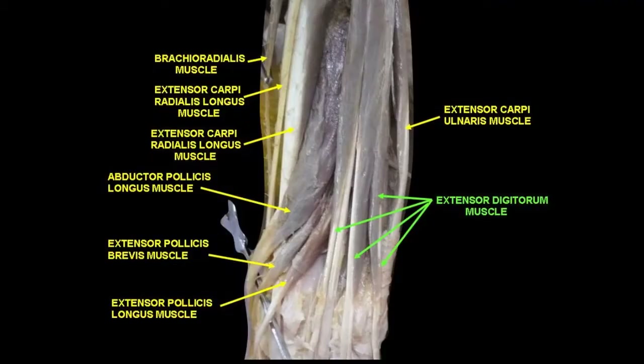The extensors on the forearm are innervated by the radial nerve. Essentially, the deeper muscles originate from the radius, ulna, and the interosseous membrane, whereas the more superficial ones come from the common extensor origin. One thing to note is that the first and third compartment muscles cross over the second compartment muscles, and this can give rise to inflammation and friction termed intersection syndrome.